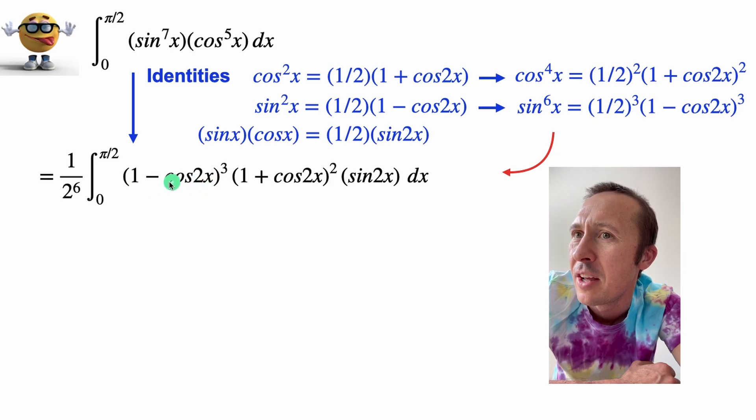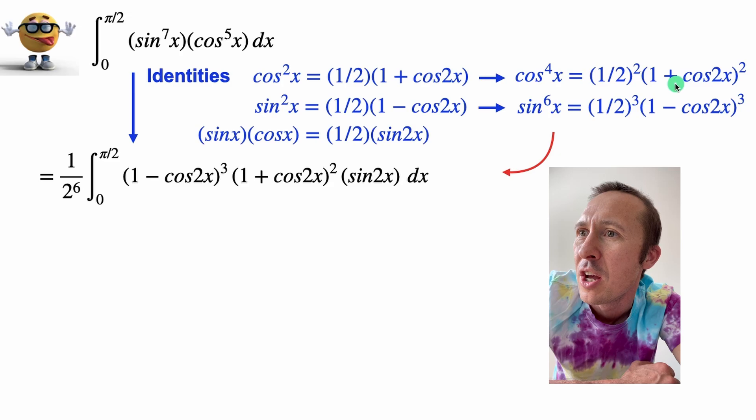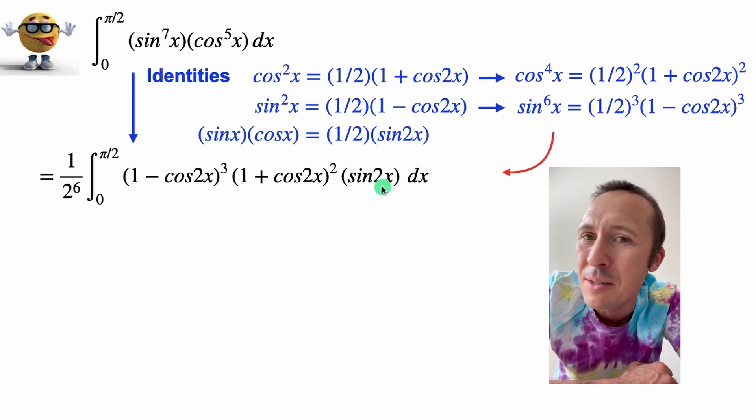Now this part here is the substitution from the sine to the power of six. This one, one plus cos 2x, is the substitution from cos to the power of four. So the leftover sine 2x, the one half is out front, is right here.